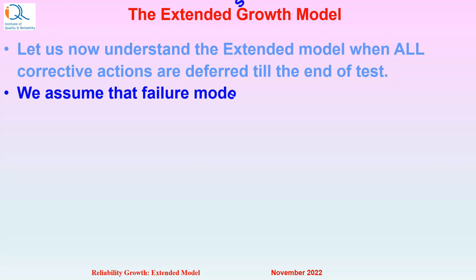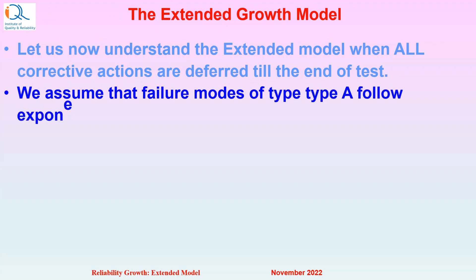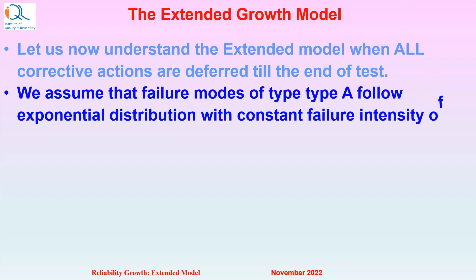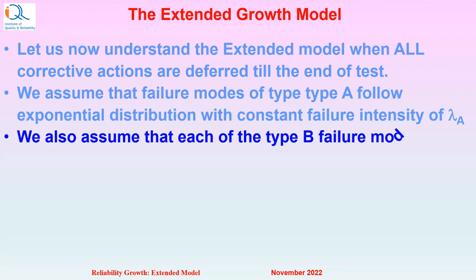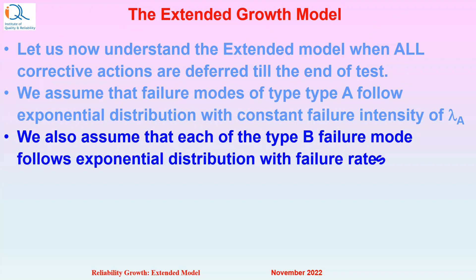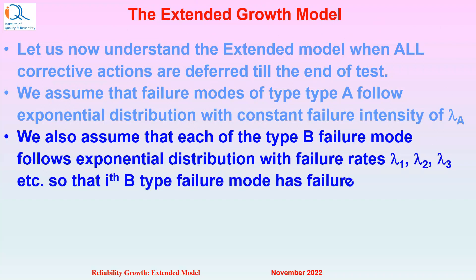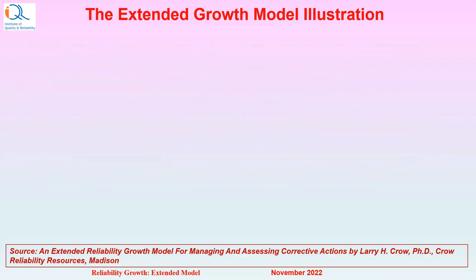We assume that failure modes of Type A follow exponential distribution with a constant failure intensity of lambda A. We also assume that each of the Type B failure modes follows exponential distribution with failure rates lambda 1, lambda 2, lambda 3, etc., so that the i-th B-type failure mode has failure rate lambda i. Let us understand the Extended Growth Model with an illustration.